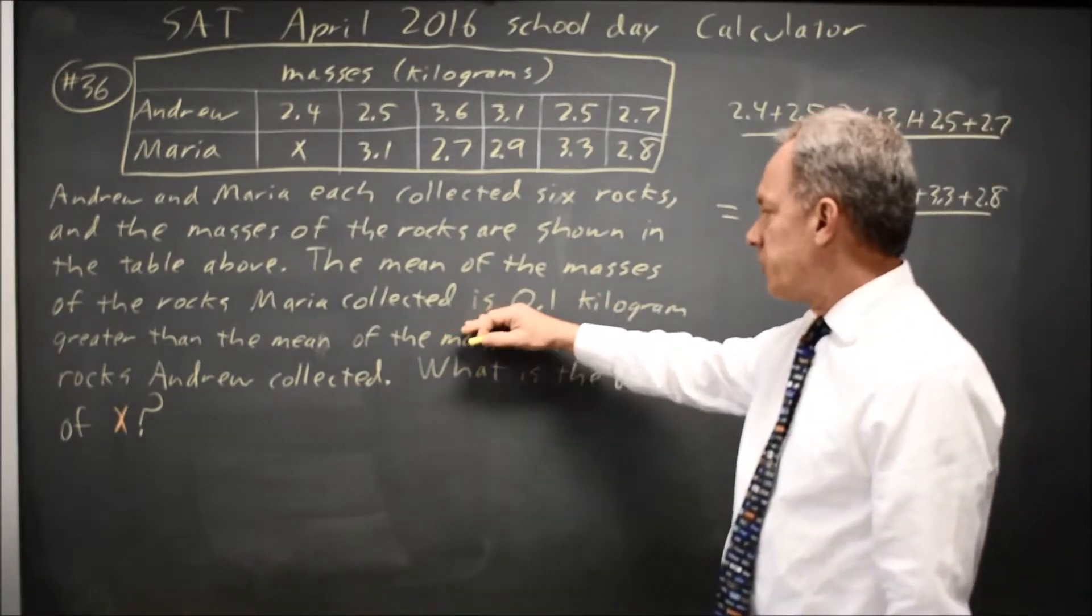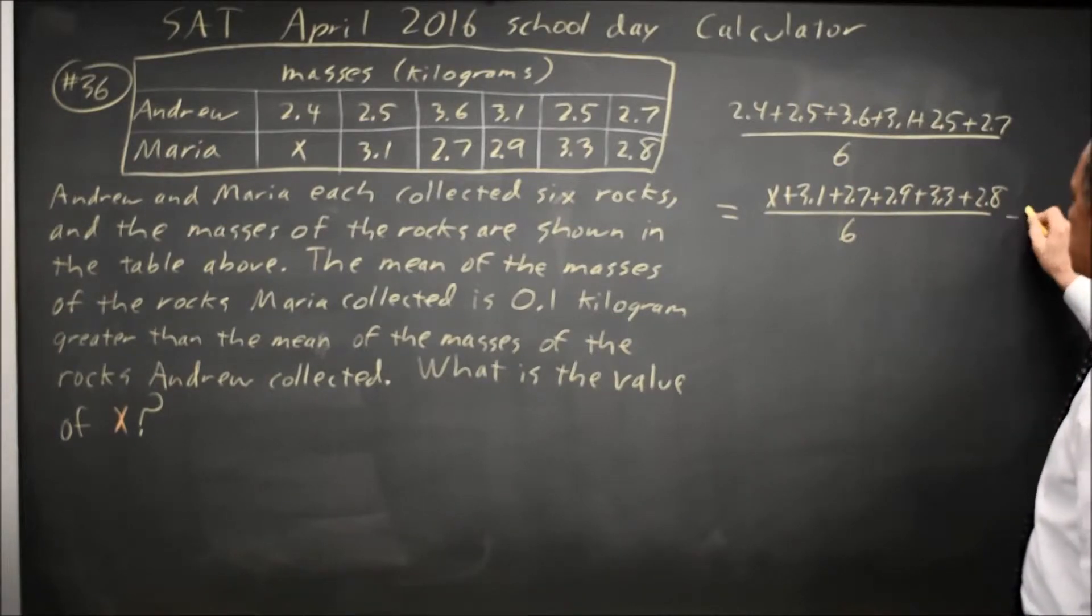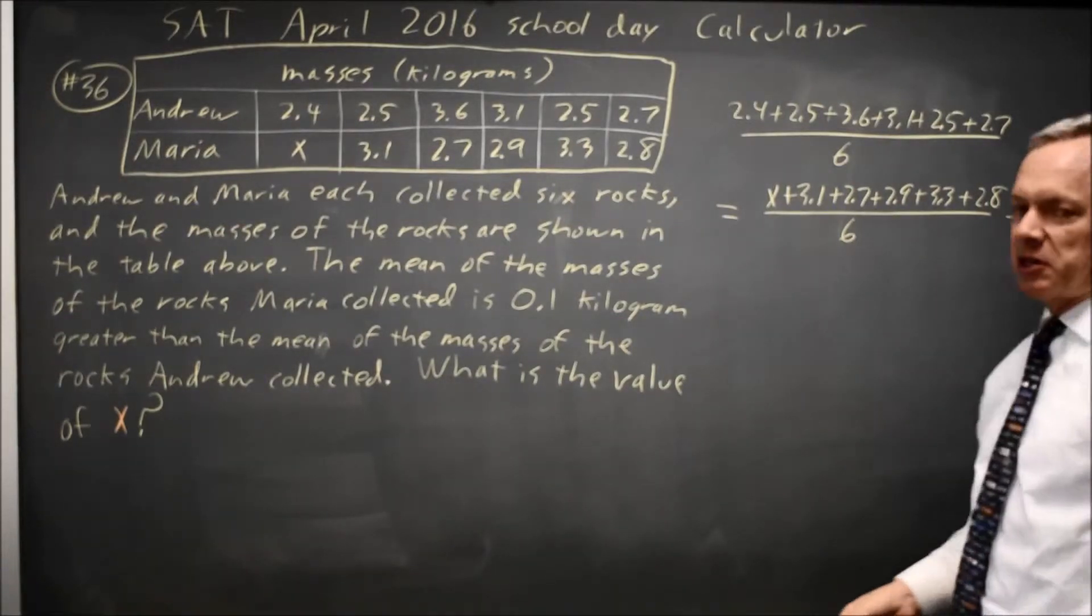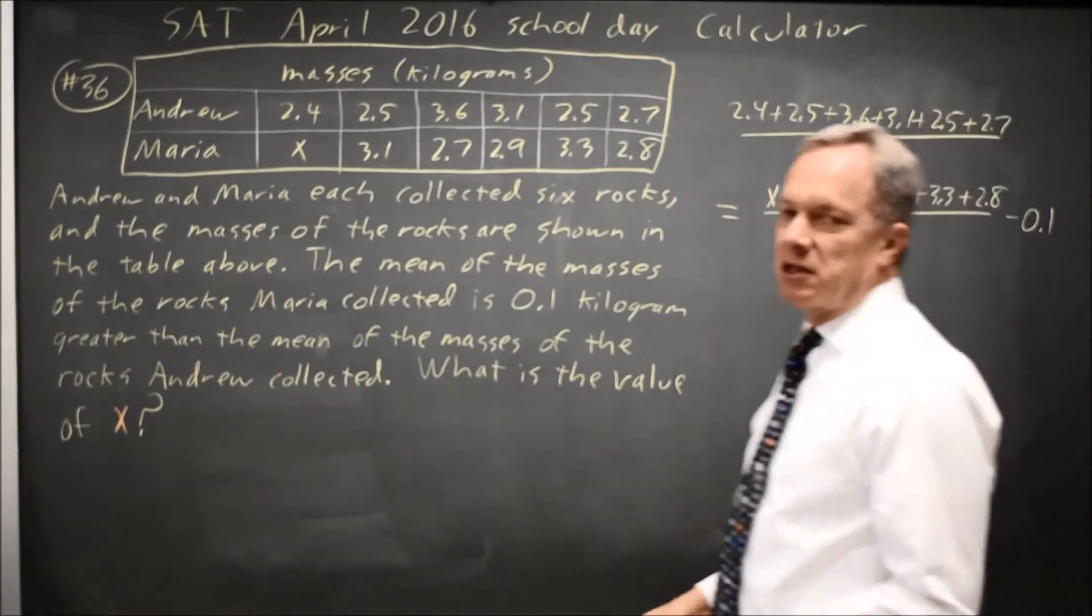...except that Maria was larger by .1. The mean of the masses of rocks for Maria is .1 larger than the mean for Andrew. So if I subtract .1 from that mean after dividing by 6, the quantity on the right will be equal to the quantity on the left.